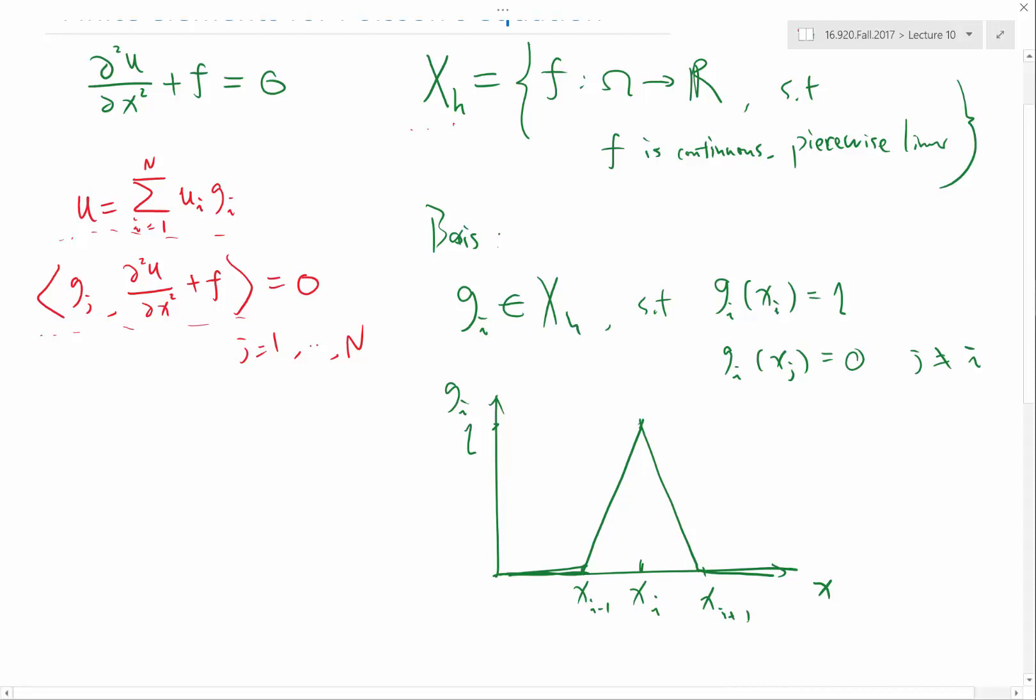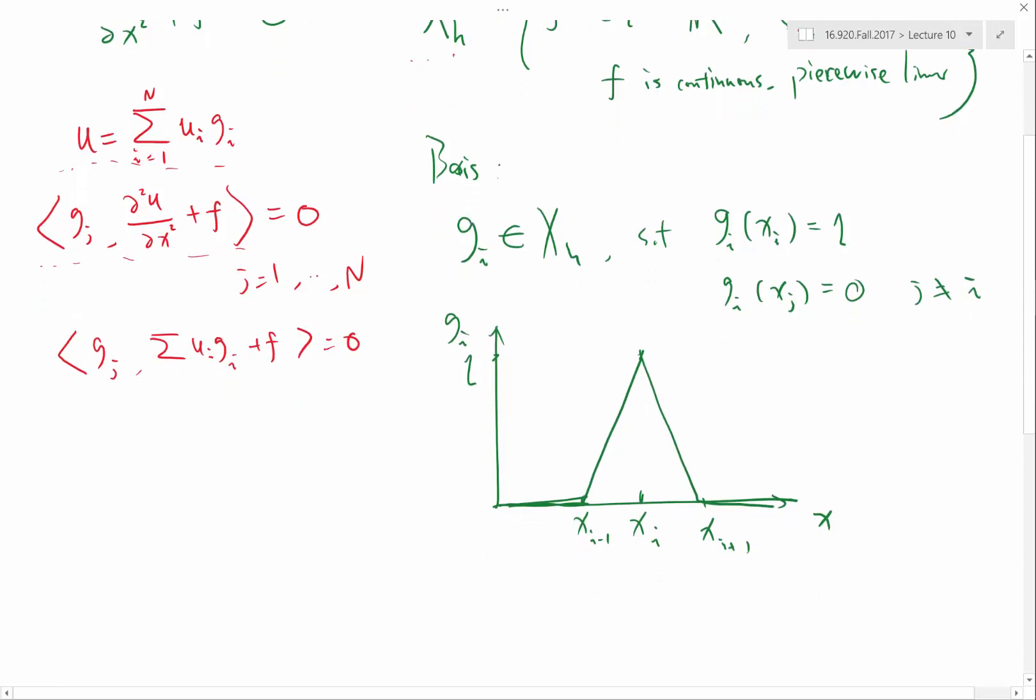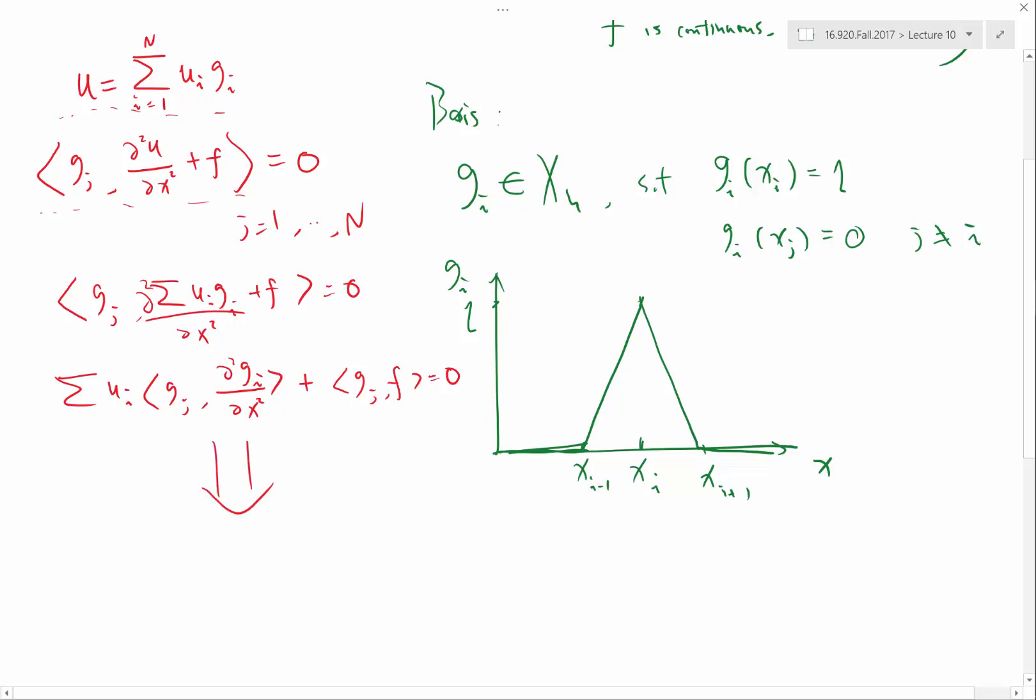What I'm going to do is substitute this representation of U into this equation. So I have a summation of U_i times the second derivative of g_i plus F equals 0, giving me two terms. U_i can be pulled out of the derivative and out of the inner product. The first term I get is g_j inner product with the derivative of g_i. The second term is the inner product of g_j with F, which equals 0. This gives me a linear matrix equation A times U equals B, where B is from this, A is from this. This is where we got in the last lecture.